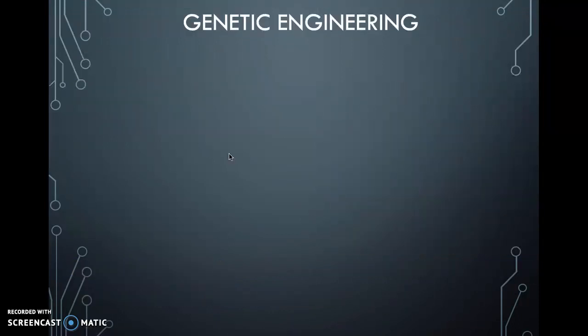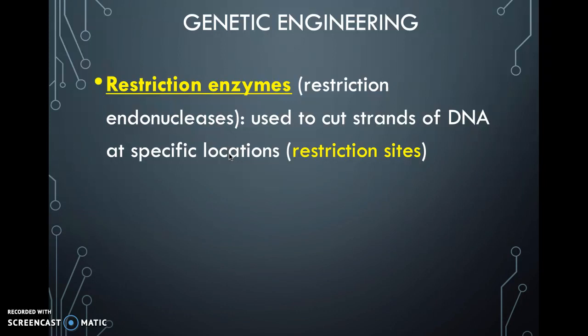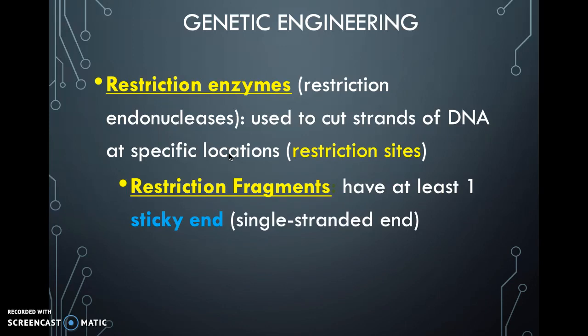How is the DNA of interest cut and merged together with the plasmid of a bacterial cell to be studied by scientists? DNA is cut using restriction enzymes, also called restriction endonucleases. These cut the strands of DNA at specific locations known as restriction sites — places where coding DNA is found. Once cut, there are fragments called restriction fragments, which have a loose, single-stranded end known as a sticky end.